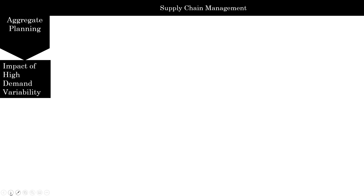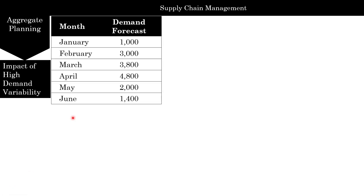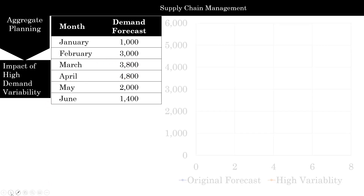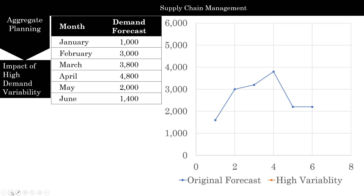The next model is going to look at our demand and the impact if our demand kind of peaks up. So instead of it being closer together, January is really low, and then it starts shooting up in February, March, and April before dropping dramatically in May and June. So high variability in your demand forecast — and we want to see how that will impact our aggregate plan.